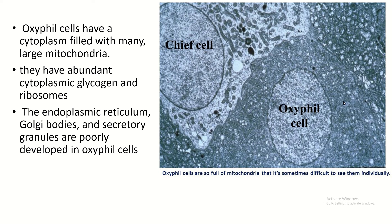This is the oxyphil cell. The cytoplasm of the oxyphil cell is filled by many large mitochondria, and in between the mitochondria, cytoplasmic glycogen, ribosomes, endoplasmic reticulum, Golgi body, and secretory granules are present.